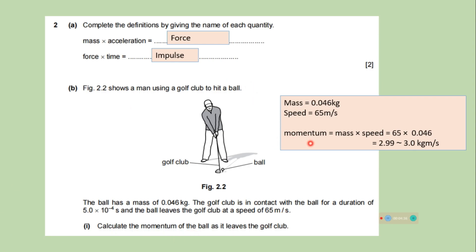Calculate the momentum of the ball. We know that momentum is mass multiplied by speed. Both values have been given. We have mass, we have speed. We will multiply to get the momentum. The momentum is approximately 3 kilogram meters per second.